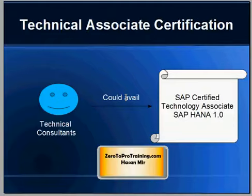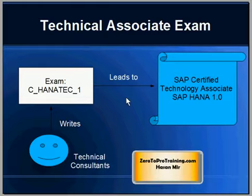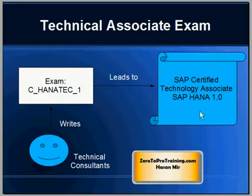For the technical stream, we have the technical associate certification available, and it is called SAP Certified Technology Associate, SAP HANA 1.0. Technical consultants could avail this certification. The exam you need to write to achieve this certification is called CHANA Tech 1. Keep in mind there is no requirement from SAP that you have to take courses from SAP — you can simply write this exam by taking courses from SAP, from elsewhere, or by self-studying.